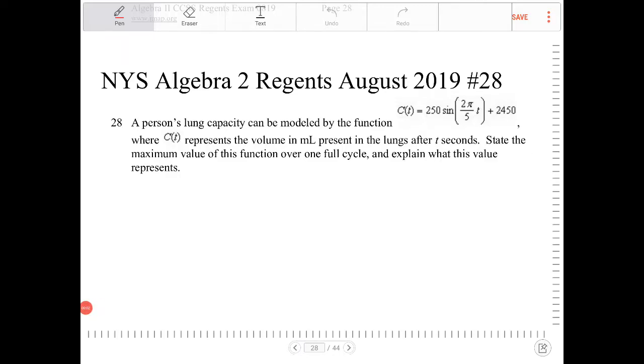A person's lung capacity can be modeled by the function c(t) = 250sin(2π/5t) + 2450, where c(t) represents the volume in milliliters present in the lungs after t seconds. State the maximum value of this function over one full cycle and explain what this value represents.